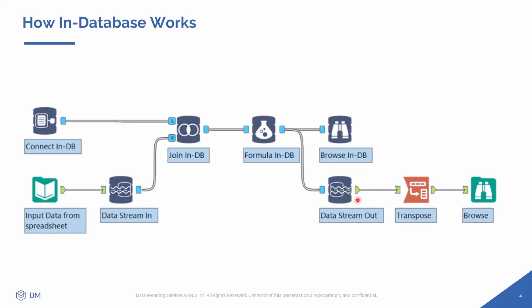And you'll see down here that I have the Data Stream Out. So I'm able to get data out from the in-database tools and use some local tools — for example, the Transpose and the local browser from regular Alteryx, and you'll see the green anchors here. So in this example, I am processing data on the database and then just getting out the result from this join and this formula. The download here is much faster than having to download and join locally.